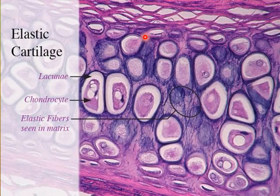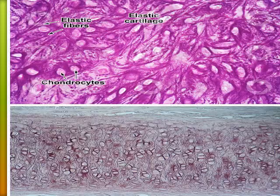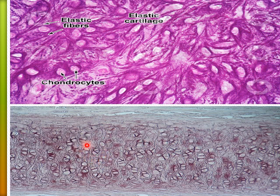This is yellow elastic cartilage. Here is the perichondrium, the chondrocytes, the matrix — which is little compared with hyaline — and these are the elastic fibers. In these pictures, the elastic fibers are visible here and there. The matrix is little and the cell nest has no more than two cells.